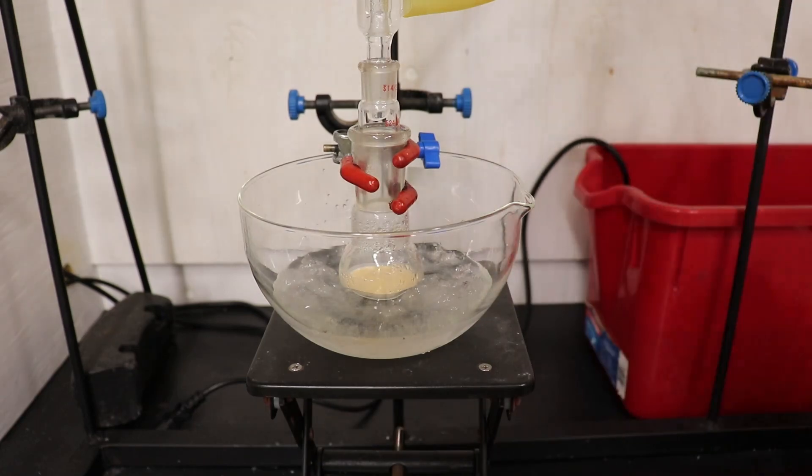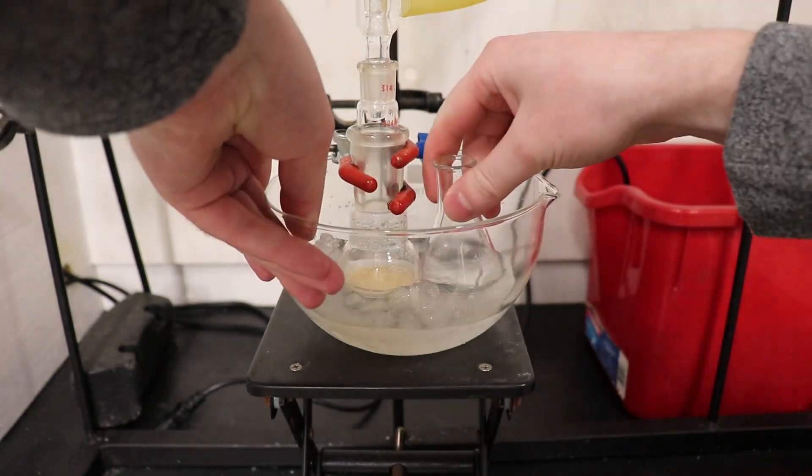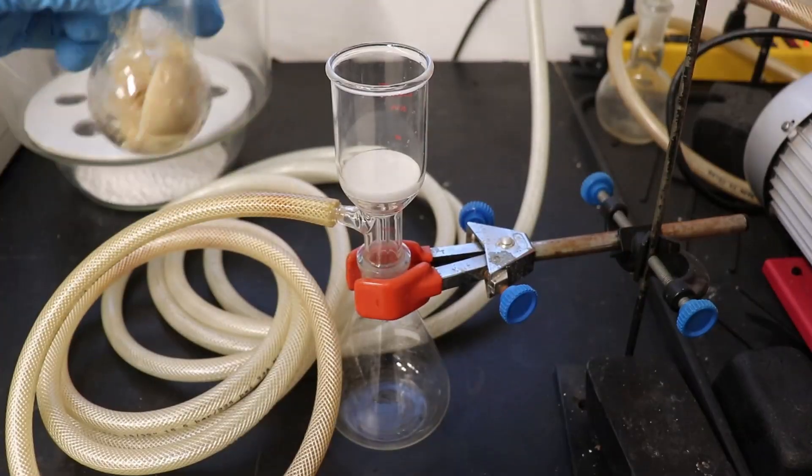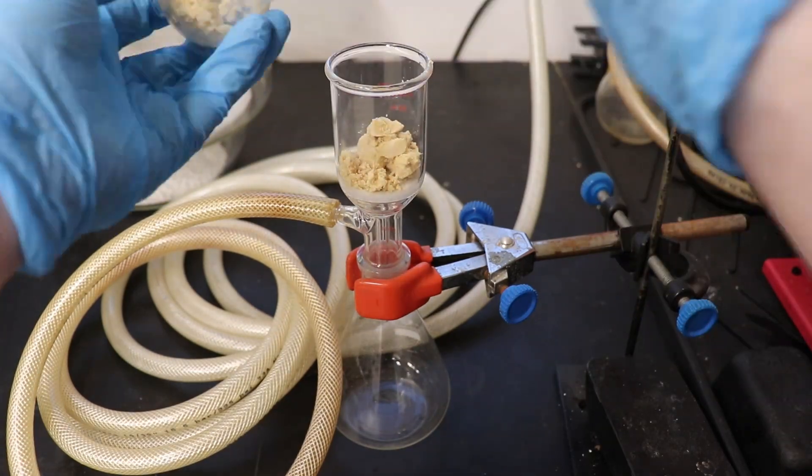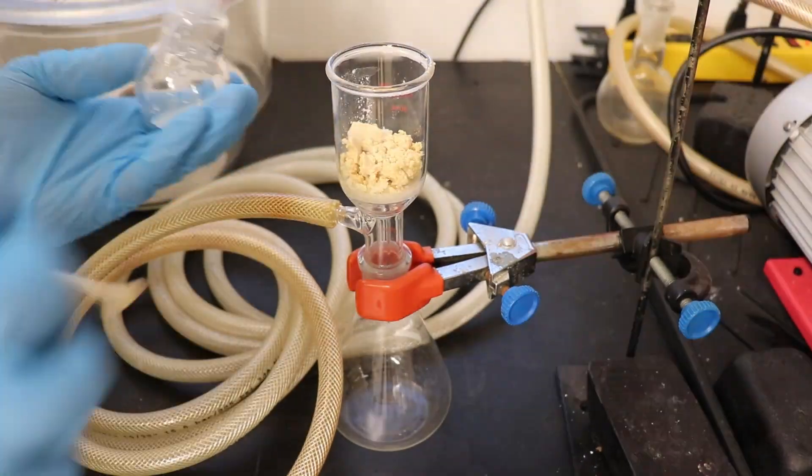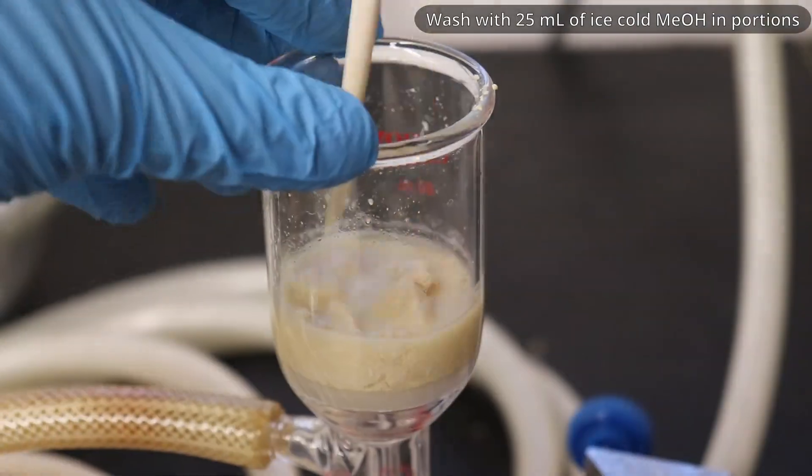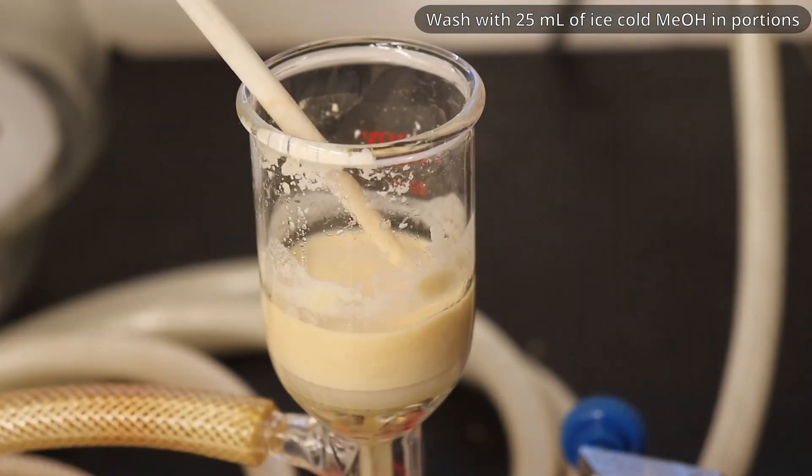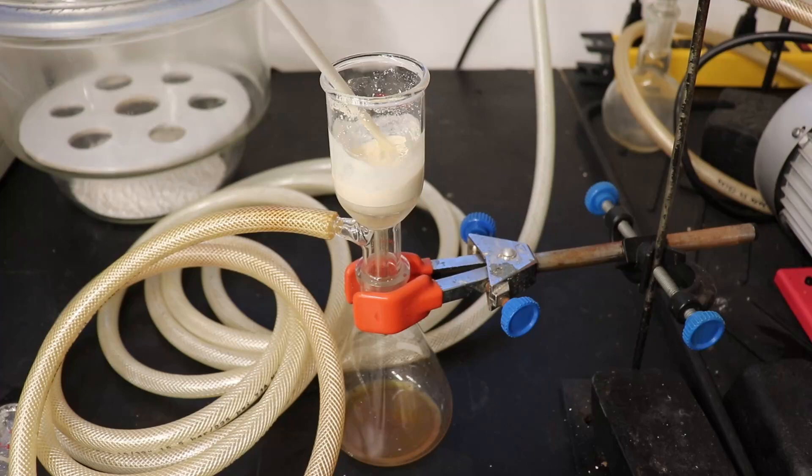The flask was then cooled in an ice bath, alongside with 25 milliliters of methanol. The pasty solid was broken up with a spatula and transferred into a glass-fritted funnel. Then it was washed in small portions with ice-cold methanol, with a total of 25 milliliters being used.